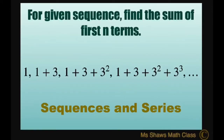Hi everyone. For the given sequence, we're going to find the sum of the first n terms. We have: 1, then 1 plus 3, then 1 plus 3 plus 3 squared, then 1 plus 3 plus 3 squared plus 3 cubed.